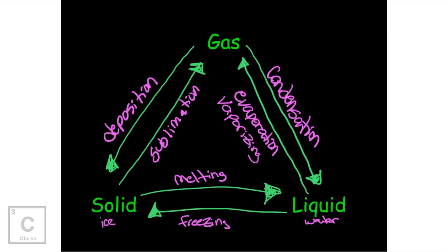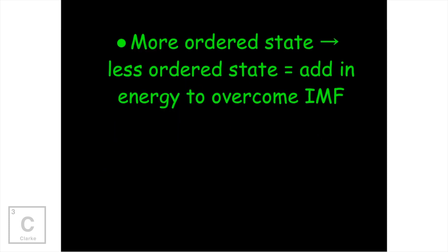Make sure that you understand and know the names of all six phase changes. When you go from a more ordered state, like a solid, to a less ordered state, like a gas, you're going to have to add energy because you've got to break up those intermolecular forces. If you're going from a solid to a gas, you're going to have to heat it up very quickly and very hard.